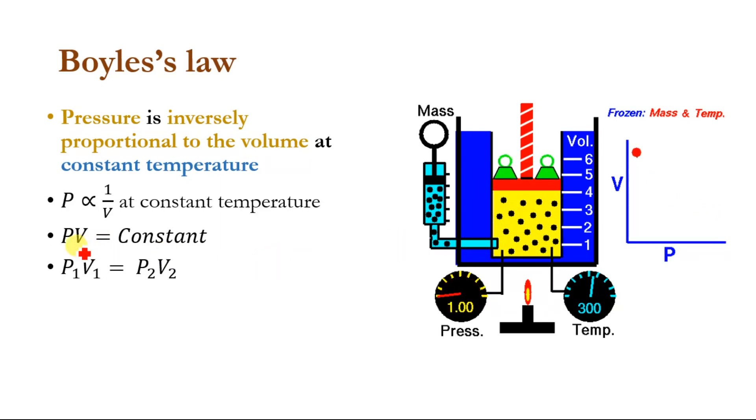This is given as PV equals constant, or we can write it in the form P₁V₁ equals P₂V₂, where P₁V₁ is the initial state of this gas and P₂V₂ is the final state, or the state after some disturbance.